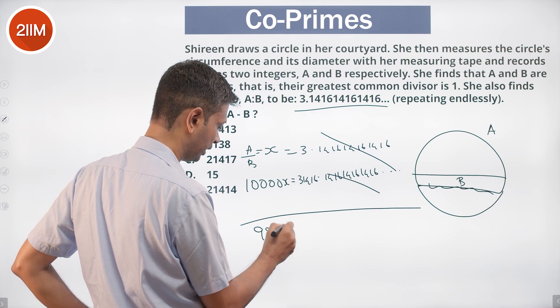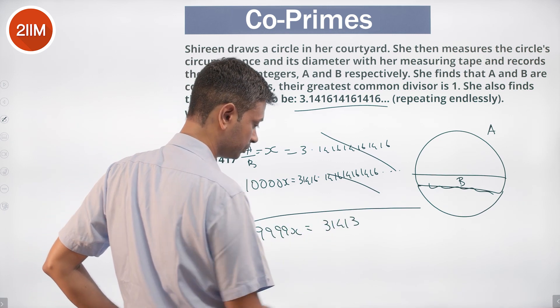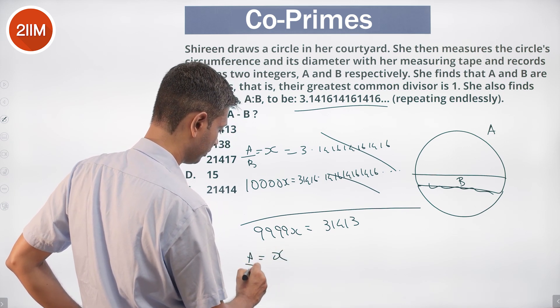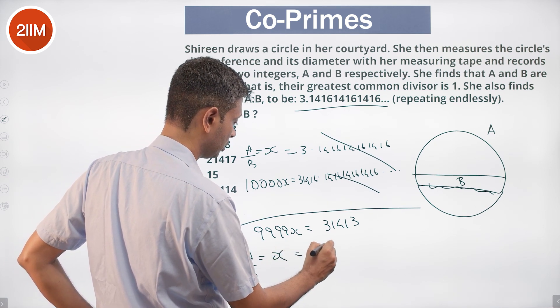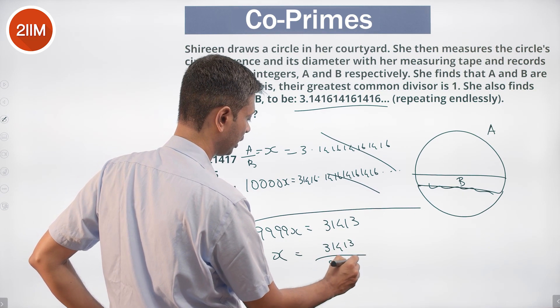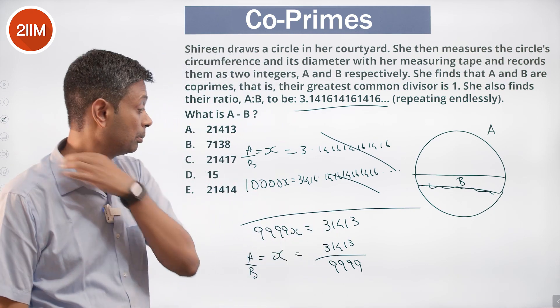I have 9999X to be equal to 31413, or X which is A by B to be 31413 by 9999. It should be a very nice approximation of pi.